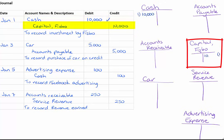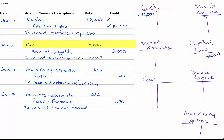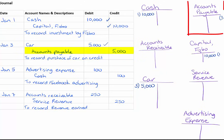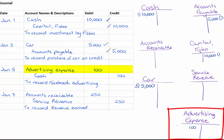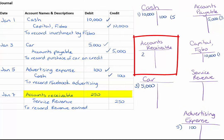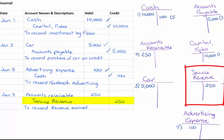The second one, capital FSBO is a credit — I'm going to put a one and check it off. The third transaction on January 3rd, I've got my car being debited for $5,000 and I also have my accounts payable for $5,000. Advertising expense is being debited for $100 on January 5th, and cash is being credited on January 5th for $100. Accounts receivable is being debited $250 on January 7th, and service revenue is being credited $250 on January 7th. Now I've put all my transactions from my journal into my T-accounts.